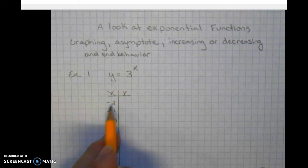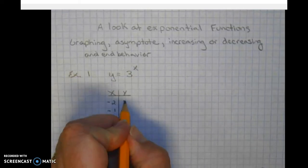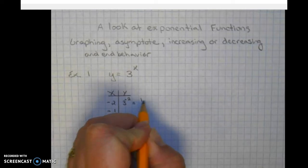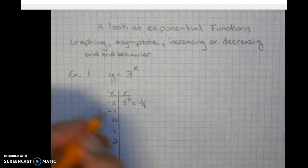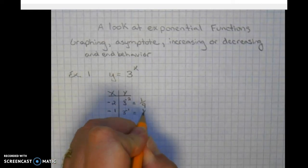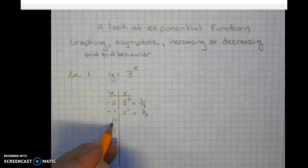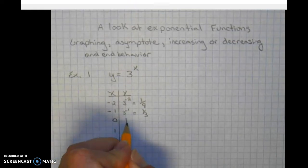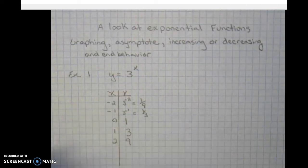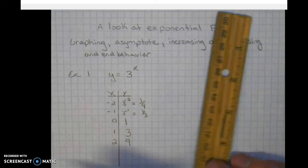So plugging negative 2 in for x, we get 3 to the negative 2 power, which we have learned is 1 ninth. 3 to the negative 1, 1 third. 3 to the 0 power, which is 1. 3 to the 1st power, 3. 3 squared, 9. Okay, let's graph this.